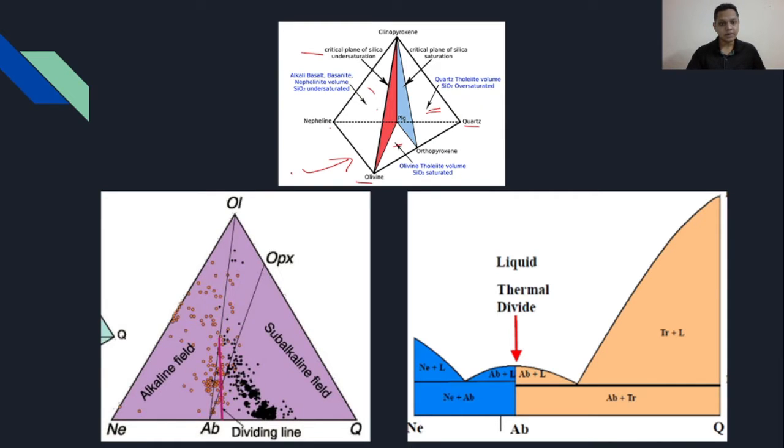What we need to look at is the base of the basalt tetrahedron, in which nepheline, olivine, quartz, and plagioclase are placed. This base is very important while dividing two important series or types of basalts. One is the alkaline series and one is the subalkaline, in which we can further divide calc-alkaline and tholeiitic series.